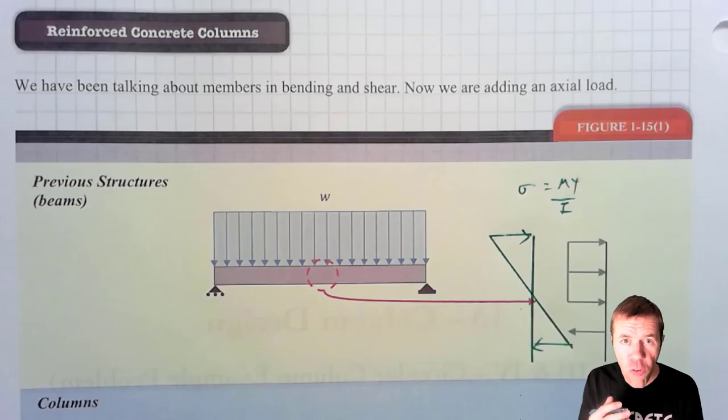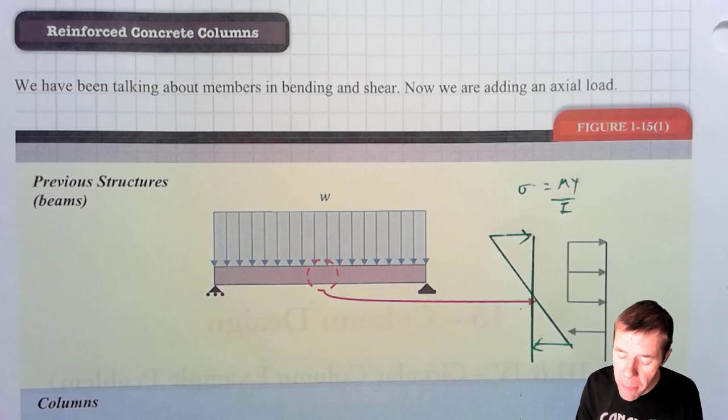This video is going to give you an introduction to interaction diagrams. They are the key to designing reinforced concrete columns. My name is Tyler Lay and I'm a concrete maniac. So far in this class we've been designing members in bending and in shear, something like a beam with a load on it. And we're going to do this exact same structure. We're just going to add some axial load.